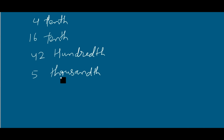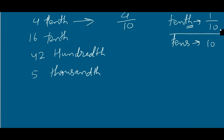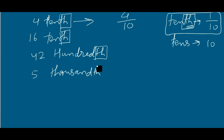First of all, tenth means one by ten. So I will write four-tenth as four by ten. Notice this 'th' at the end — when you find 'th' at the last of the word, that means the number will go in the denominator. So 'tenths' means ten in the denominator. Be clear about this.